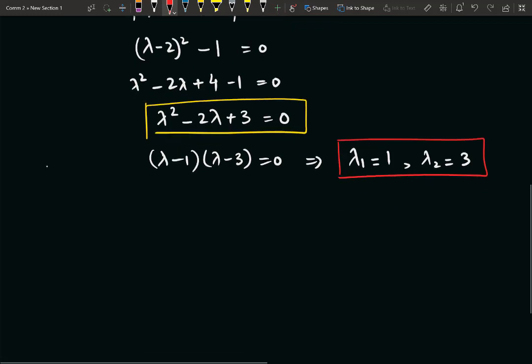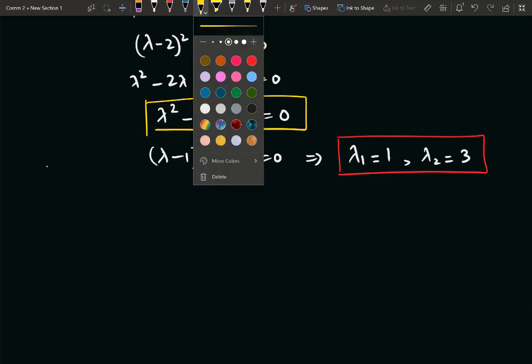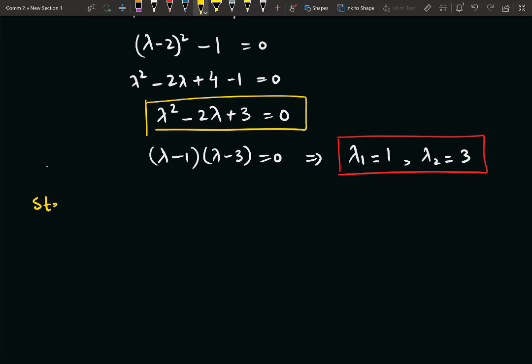Now in step number 2, we will be finding the eigenvectors. And definitely, eigenvectors will be equal to the number of distinct eigenvalues. For this system matrix, we have two distinct eigenvalues, so we will be having two eigenvectors.